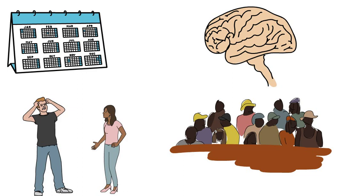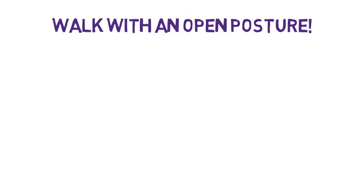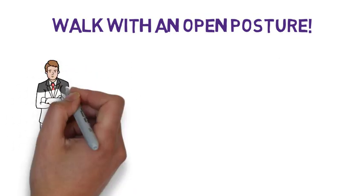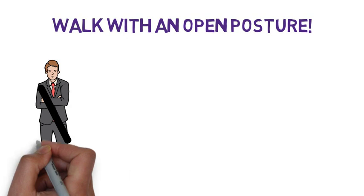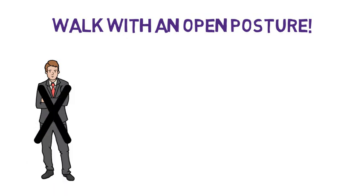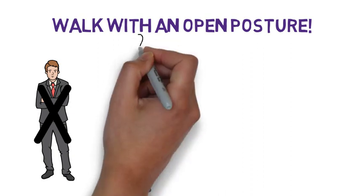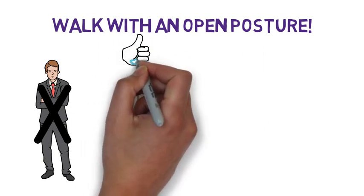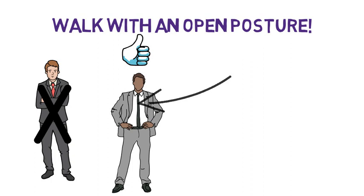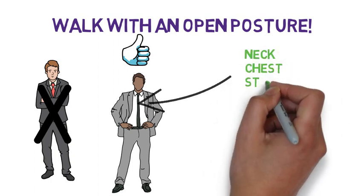How to cope with anxiety at work, tip number four. Walk with an open posture. Believe it or not but this also works. After a few minutes of walking or standing tall your anxiety levels will drop. Don't cover your chest, neck or stomach with your arms or hands.